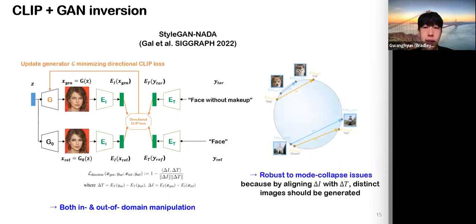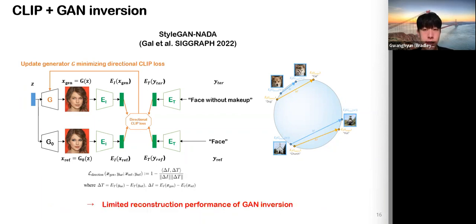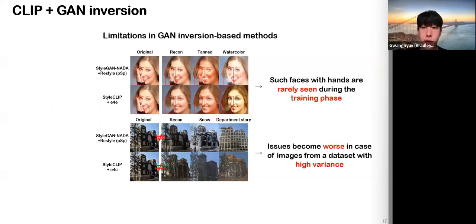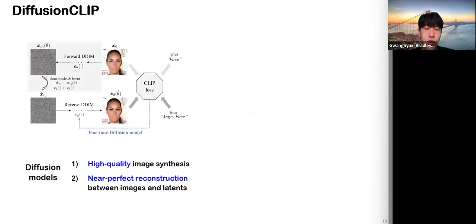To resolve these issues, StyleGAN-NADA — which updates the StyleGAN generator minimizing cosine distance between CLIP embeddings — is introduced. It also adopts directional CLIP loss, which is robust to mode collapse issues. However, its manipulation is still limited due to limited GAN inversion performance. Even state-of-the-art inversion methods fail to reconstruct images with novel poses and details, and images from high-variance datasets such as church images generate distorted manipulation results.